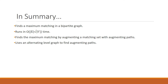In summary, the Hopcroft-Karp algorithm finds the maximum matching in a bipartite graph. It does this in O(E√V) time by augmenting the matching set with augmenting paths. It uses an alternating level graph to find these augmenting paths.